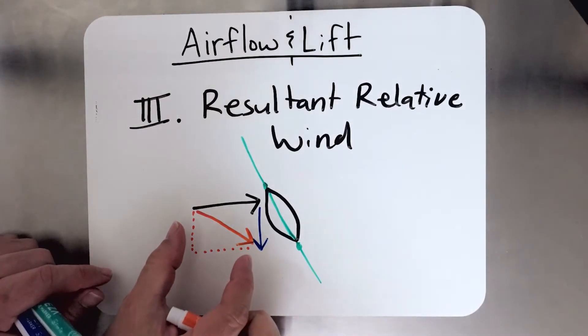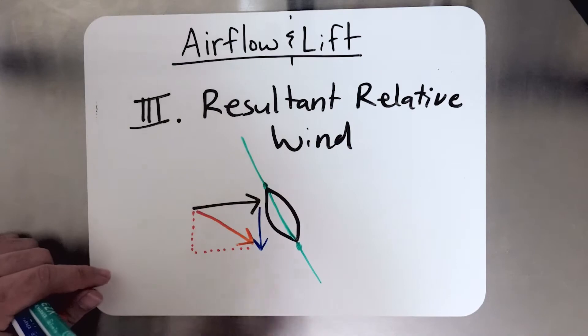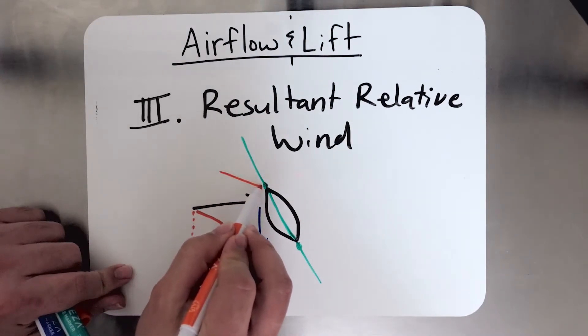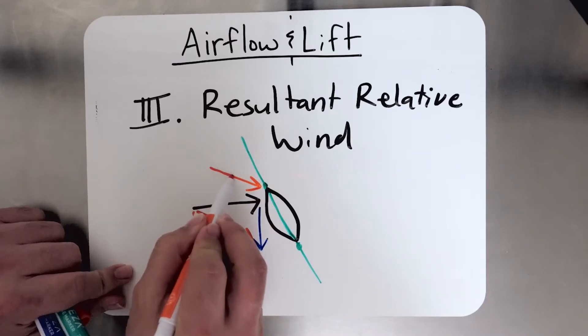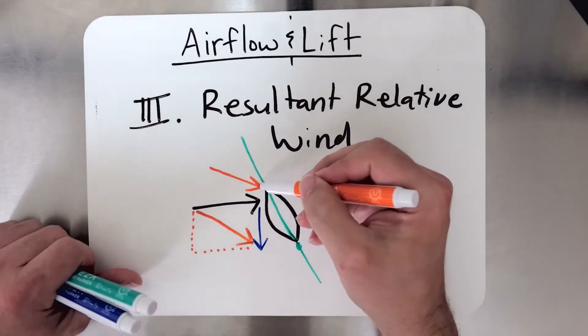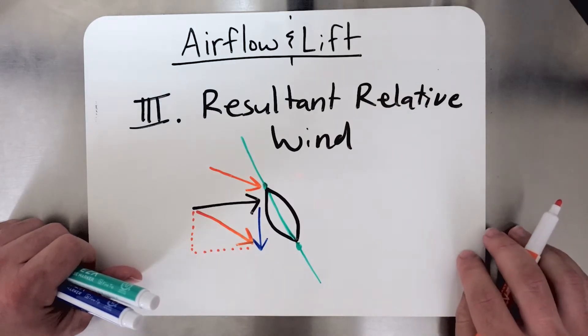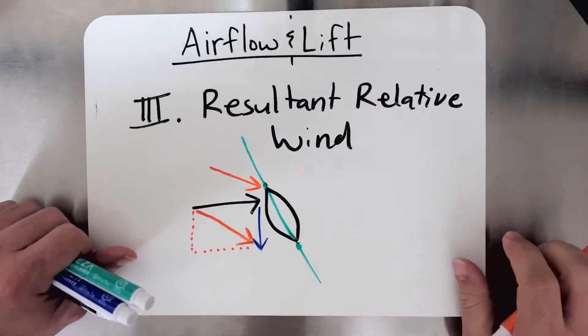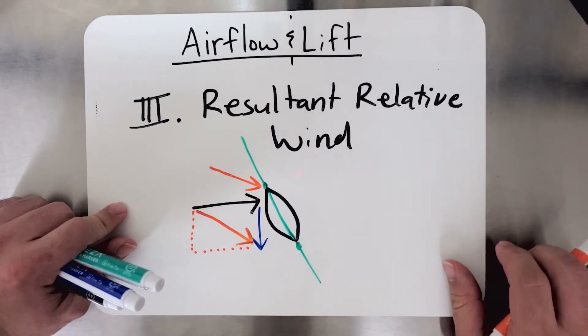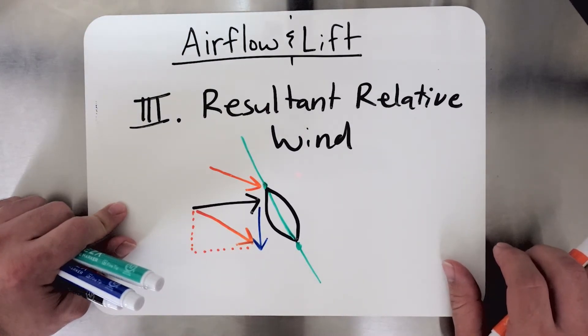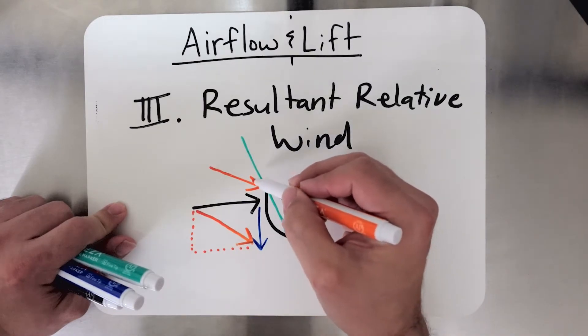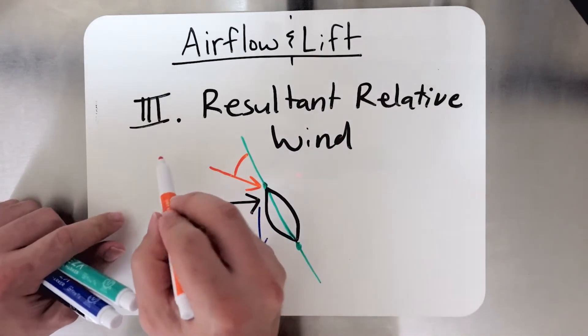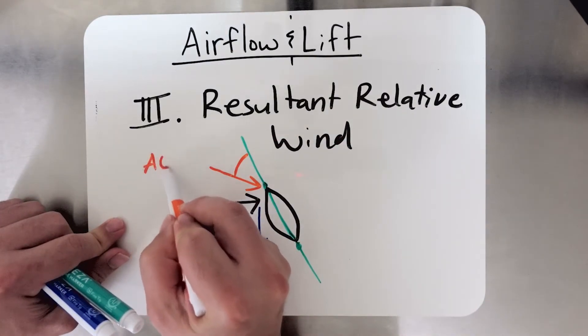Now we can easily take this vector and simply transpose that here. So it's the same vector, it's just moved so that the tip meets the leading edge of the airfoil. Now this orange vector here, that's the resultant relative wind, and it's very important because it forms this angle here with the chord line, and this angle is your angle of attack.